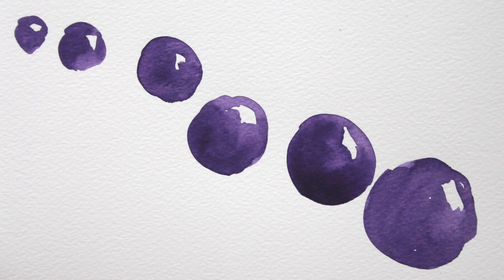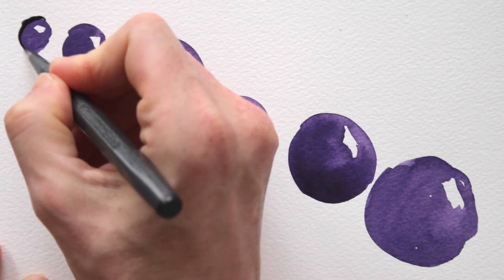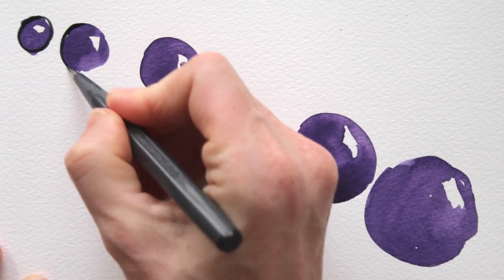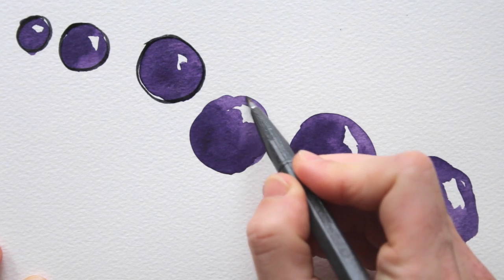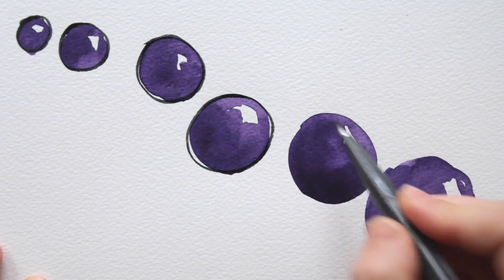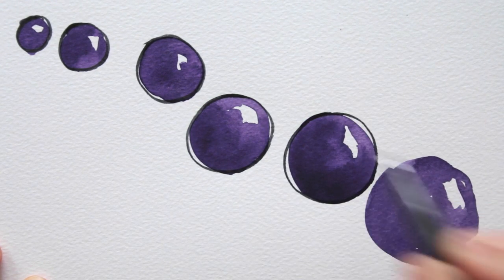Once dried, I pick up my marker and draw circles around the balls. I outline them, and for a playful effect, I purposely don't trace the exact shape of the paint blobs, but I draw a circle on top.